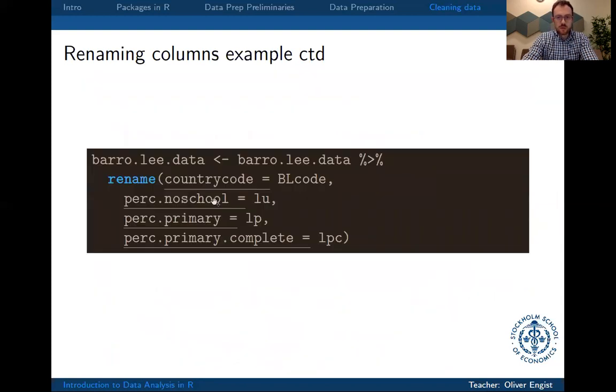So the way to solve this is by using rename and then, for example, if we refer to a code book, we will find out that BL code is simply a country code, LU is the percentage in a country who has no schooling, LP is the percentage of people with only primary education, LPC is the percentage of the population with primary education completed, and so on.